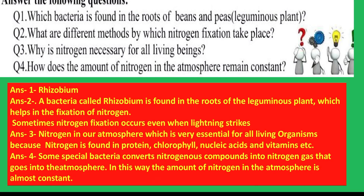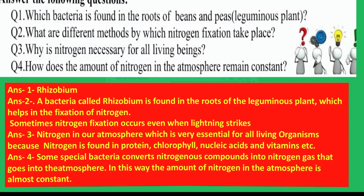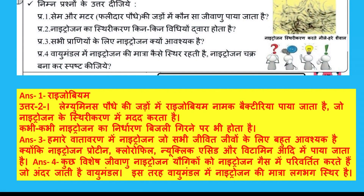Hindi mein bhi dekhte hain: matar ki jadhon mein kaun se jivanu paaye jate hain? — Rhizobium. Do tarike kaunse hain sthrikaran ke? — Ek toh bacteria ke dwara, aur doosra bijli girne se. Tisra: sabhi praniyon mein nitrogen zaroori kyon hai? — Protein, chlorophyll, nucleic acid, aur vitamins mein paaya jata hai. Vayu mandal mein nitrogen ki matra sthir kaise rehti hai? — Kuch jivanu nitrogen yougikon ko todh kar wapas nitrogen gas mein tabdeel karte hain.